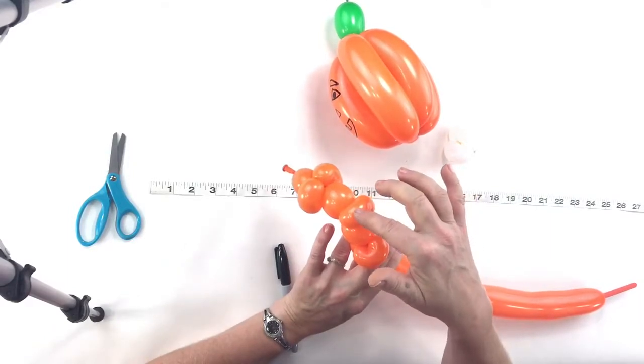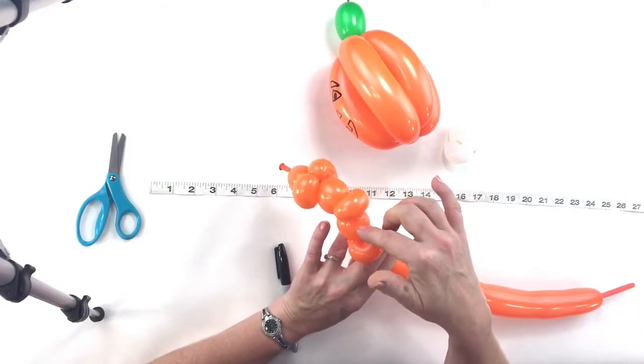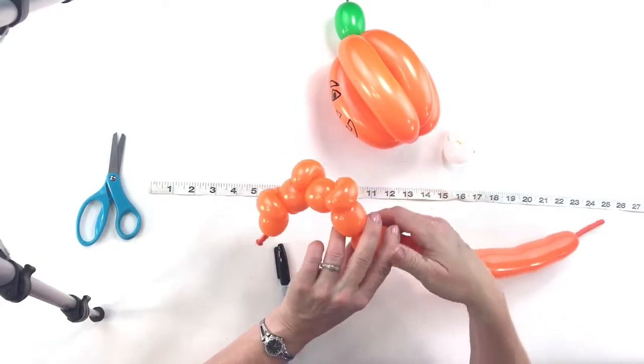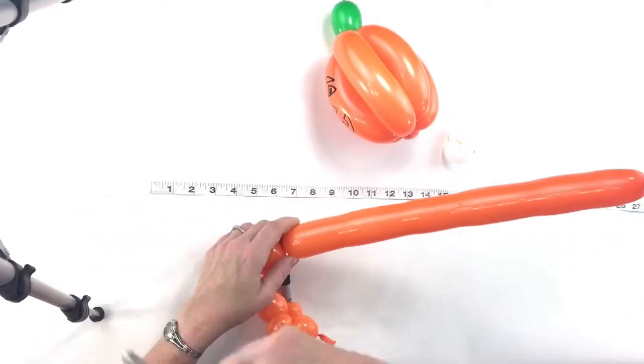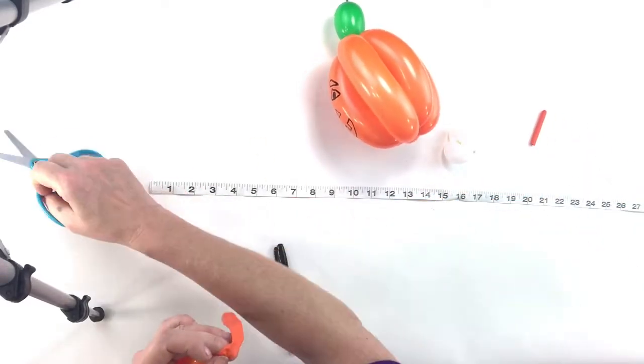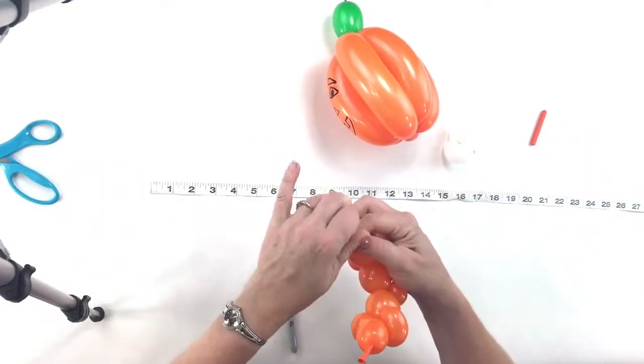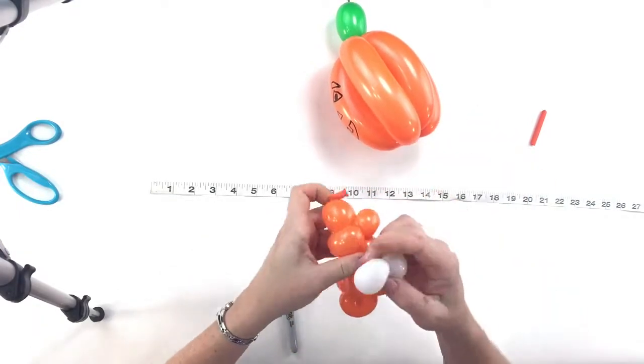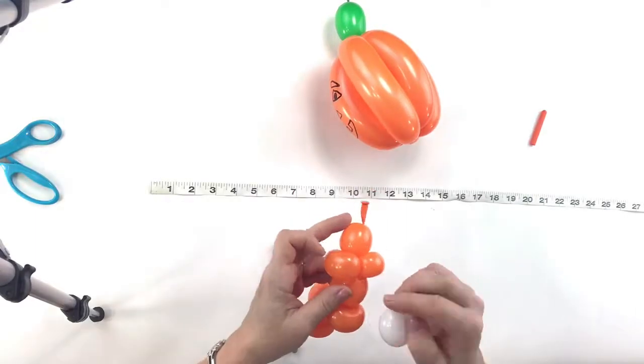And then another one inch bubble and pinch twist that. So a bunch of one inch bubbles. One inch bubble, two one inch bubbles and pinch twist them. A one inch bubble, another one inch bubble and pinch twist it, another one inch bubble and another one inch bubble and pinch twist it, and then another one inch bubble. And then the rest of this is going to get cut and tied off. Like that.